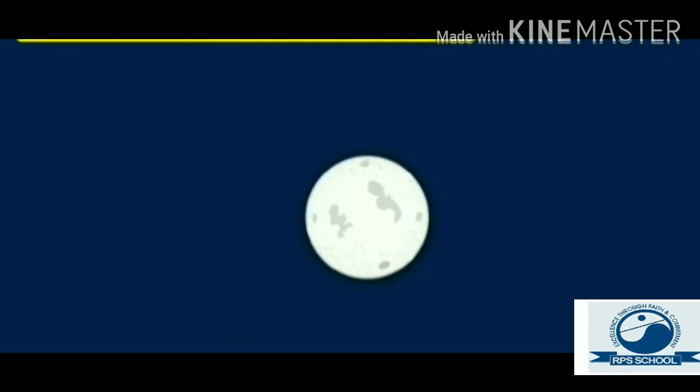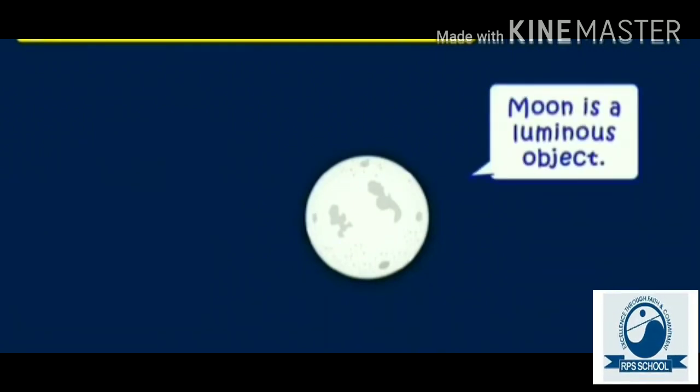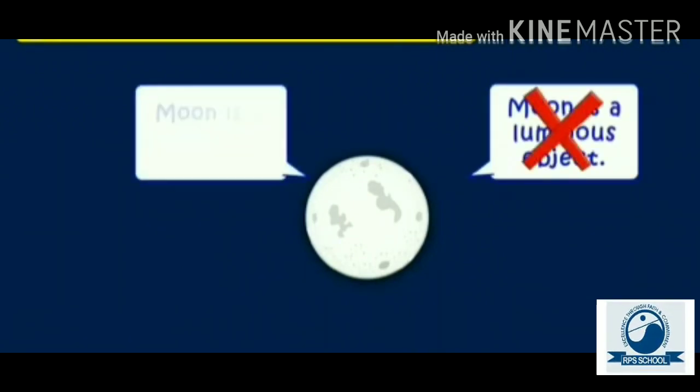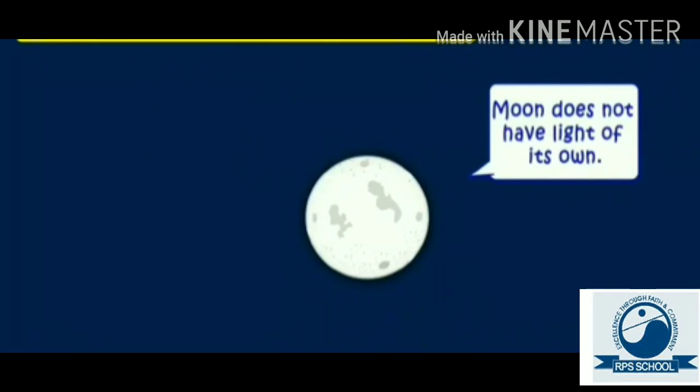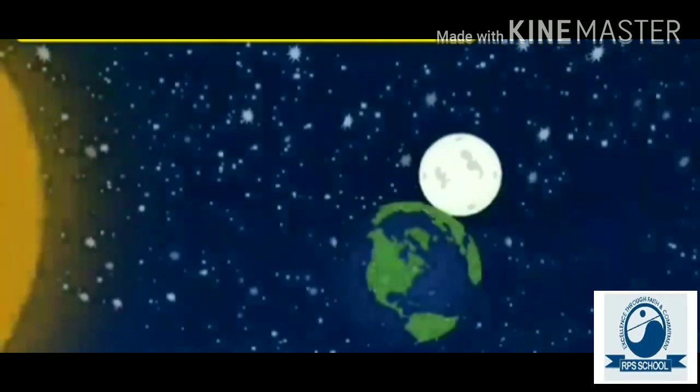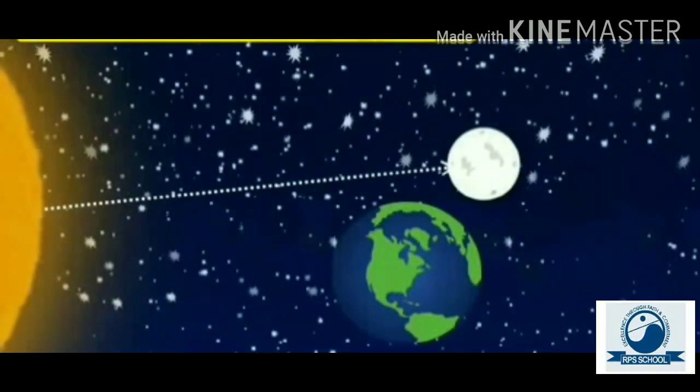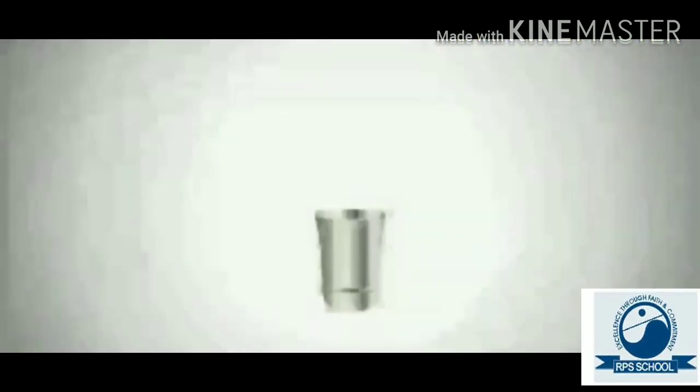Now, tell me, is the moon a luminous or non-luminous object? Most of you will say moon is a luminous object. But, no. No, my dear children. Moon is a non-luminous object. Moon does not have light of its own. It reflects the light of sun falling on it because of which we can see it at night.